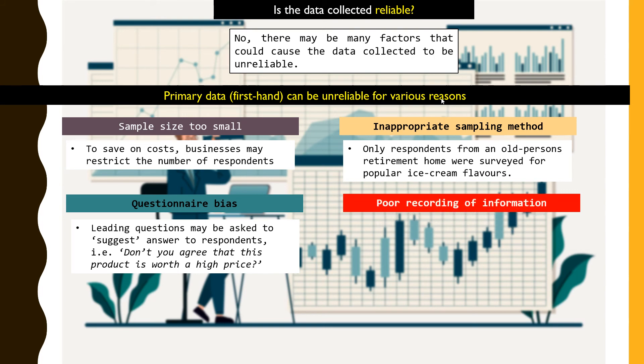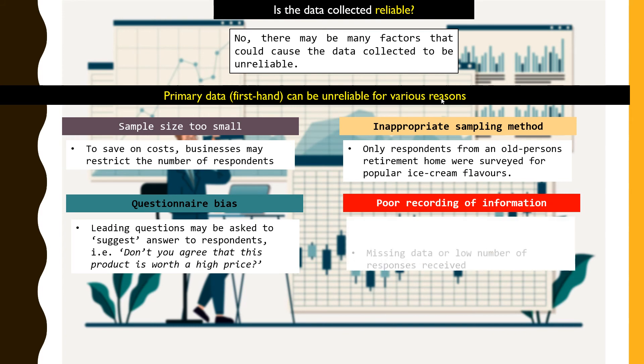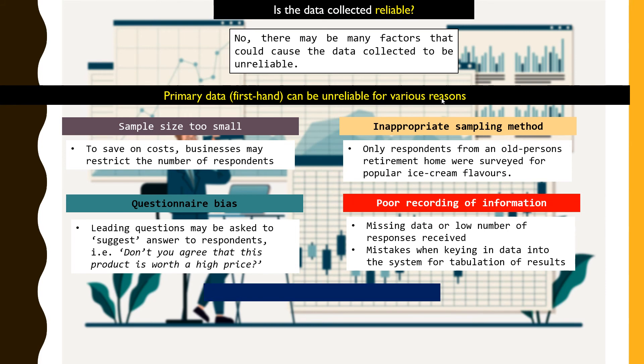At the same time there could be the way of how the information is recorded that is very poorly done. There could be some missing information as we are transferring the information into a proper system to really get valuable input from it, or there could be mistakes in keying in the data. So these are all factors that could lead to poor recording of information, thus making the information unreliable.